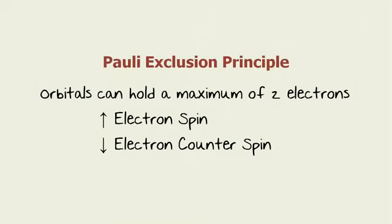We'll review by first taking a look at orbitals and the Pauli exclusion principle. It says that an orbital can hold a maximum of two electrons, and we refer to those electrons as a spin and a counter spin.